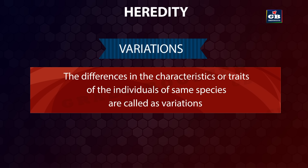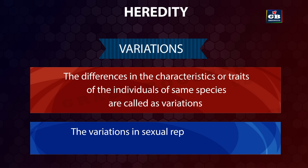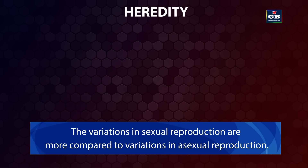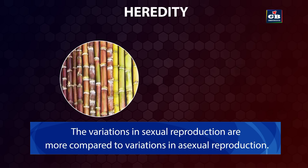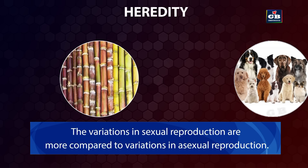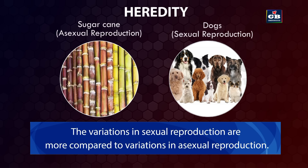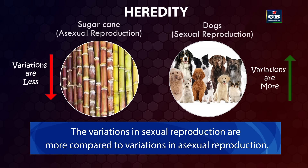Variations are observed in both sexual and asexual reproduction, but the variations in sexual reproduction are more compared to asexual reproduction. For example, a group of sugarcane plants that reproduce by asexual reproduction shows very little variation, whereas a group of dogs that reproduce by sexual reproduction shows a lot of variation.